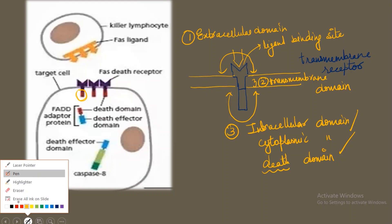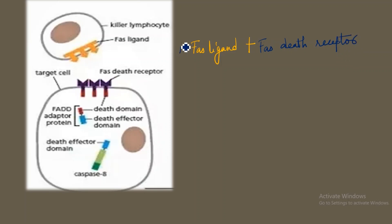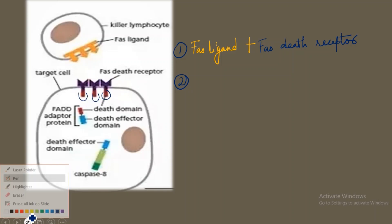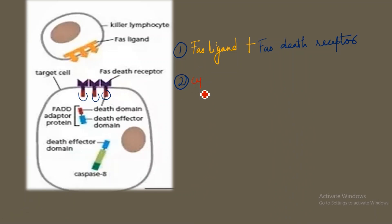The first step is that the FAS ligand binds to the FAS death receptor. We know that the FAS death receptor has a cytoplasmic domain shown here in dark red. Once the ligand binds, this cytoplasmic domain of the FAS death receptor will come close together, and this cytoplasmic domain — also called the death domain — will form a binding site for another protein known as the adapter protein.